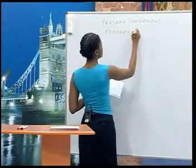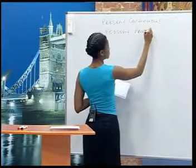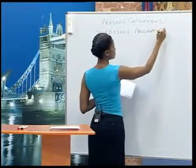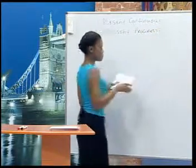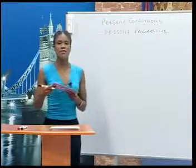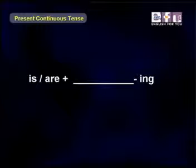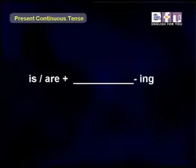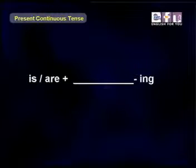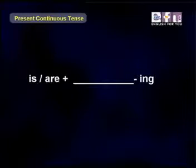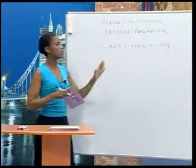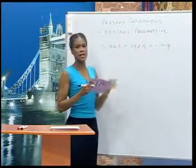So it means exactly the same. The form for the present continuous is: is or are, plus your verb, plus you add -ing to your verb. So: is or are + your verb + -ing.